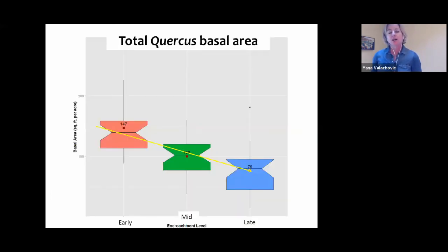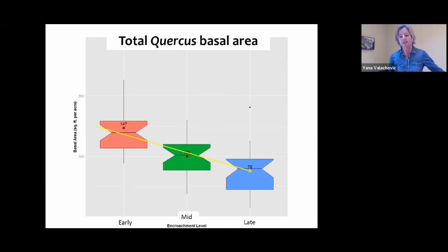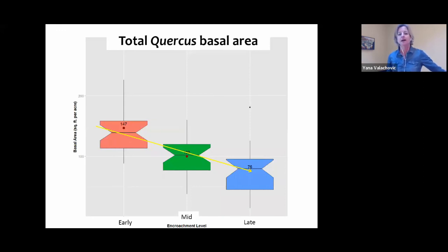From a forester's perspective, we think in metrics like basal area — the square footage of area occupied by trees. In the early stages, we have on average about 147 square feet of basal area in these stands, declining rapidly down to 76 square feet in the later stage. These metrics are important because they key into our regulatory system, and this data was used to help guide regulatory changes to facilitate restoration.